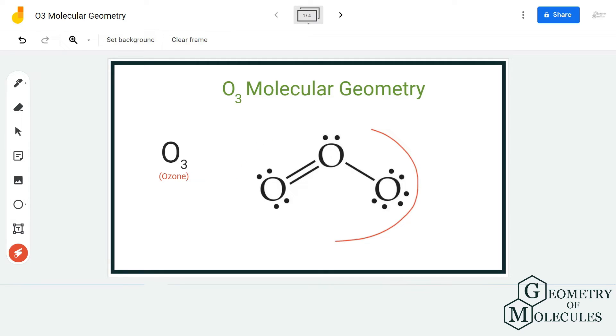So here is the Lewis structure of O3. It has three oxygen atoms with one double bond and one single bond. Ozone has resonance structures, but generally this is the Lewis structure we use to show the ozone structure. We are going to take this structure over here.